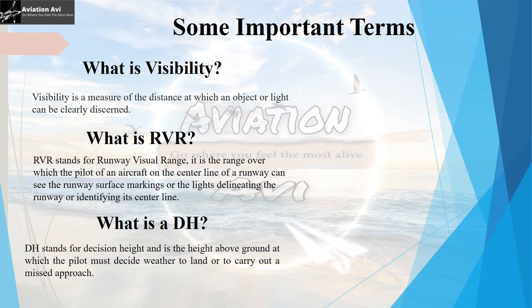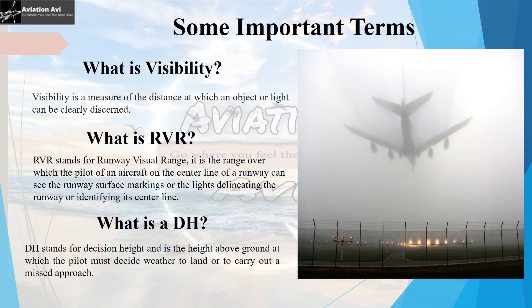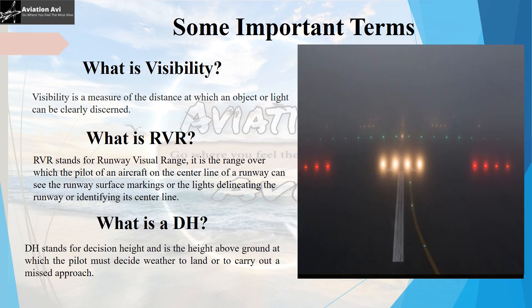Let us start with understanding some important terms. What is visibility? Visibility is the measure of distance at which an object or light can be clearly distinguished. Now what is RVR, or the runway visual range? It is the range over which the pilot of an aircraft on the centerline of the runway can see the runway surface markings or the lights delineating the runway or identifying its centerline. The distance up to which these markings or lights on the runway are visible is called the runway visual range.